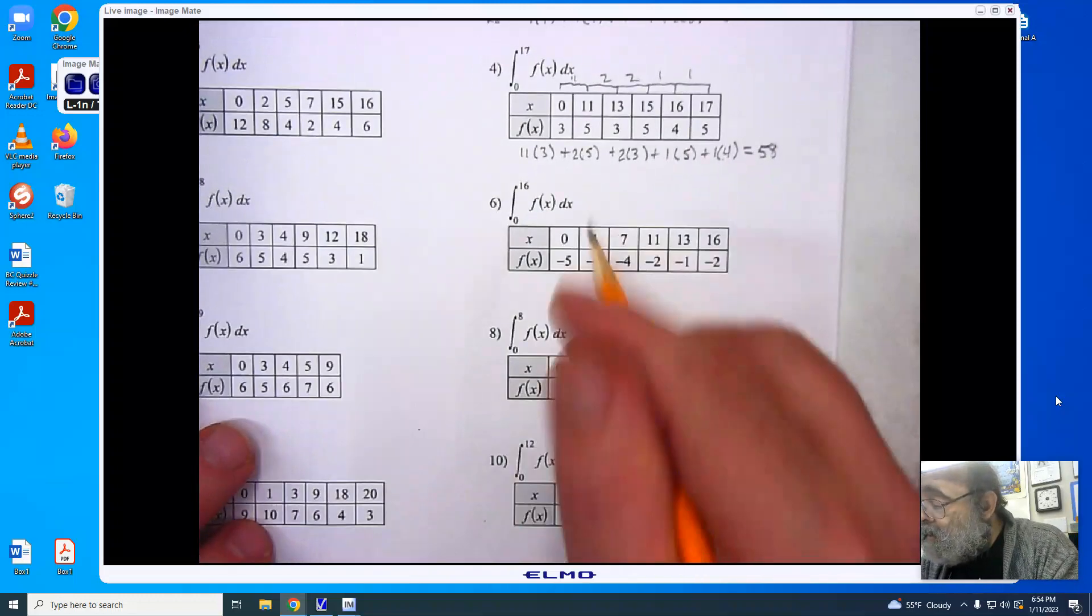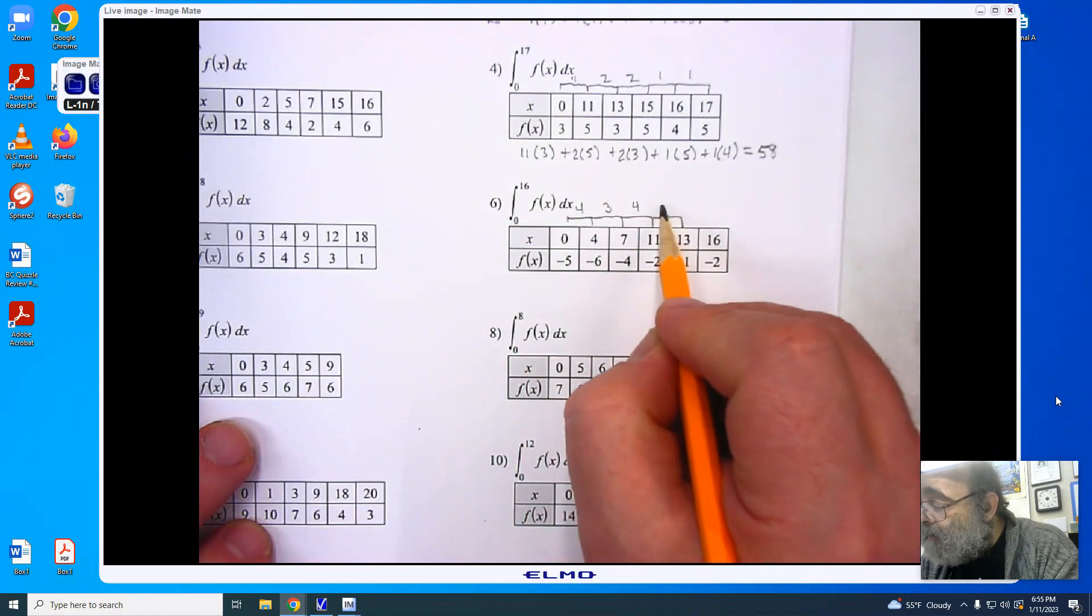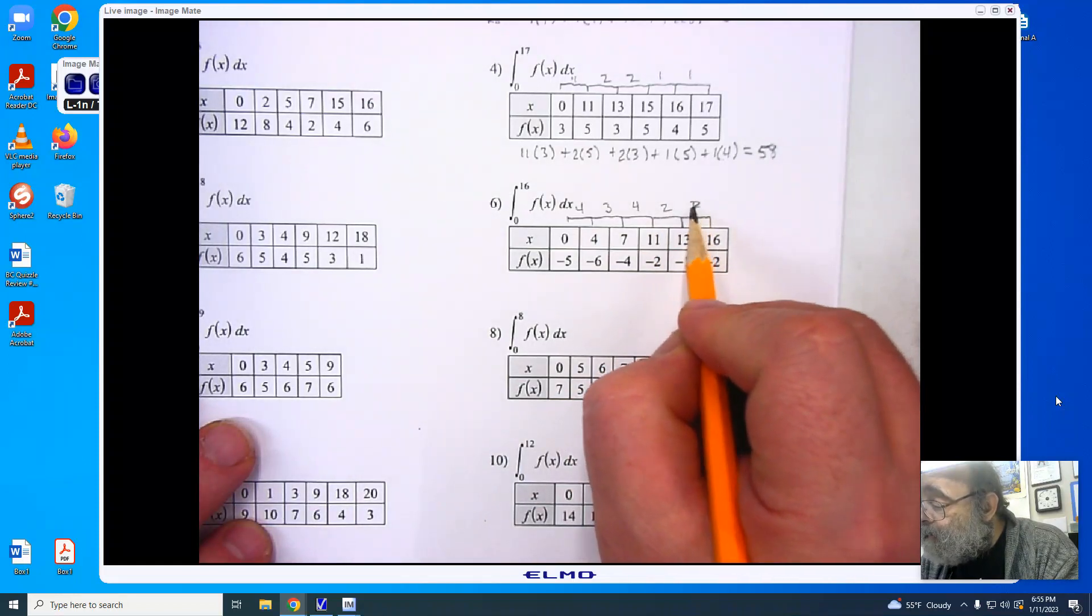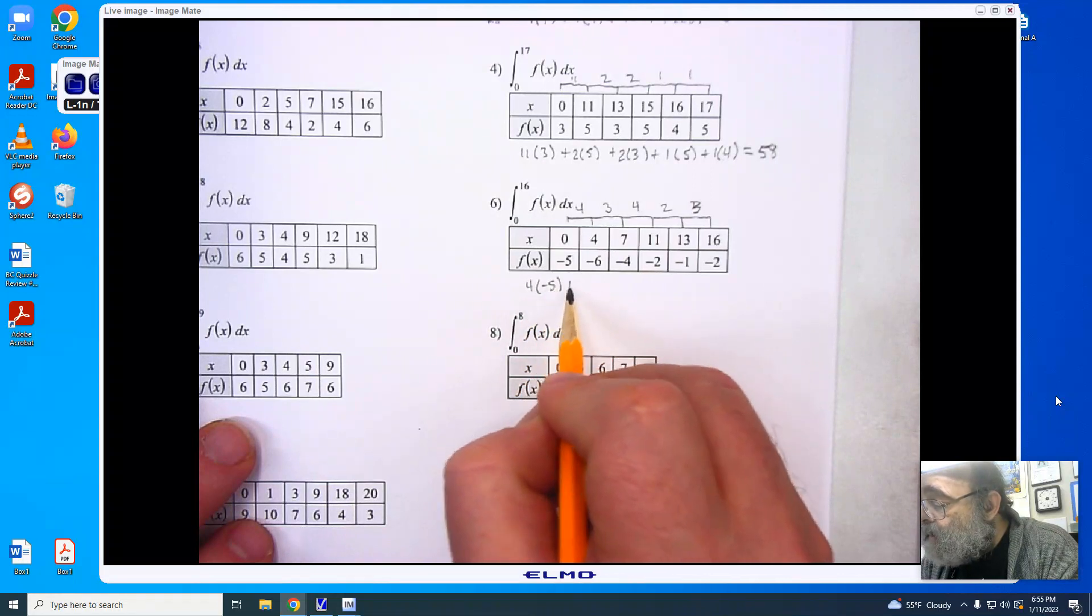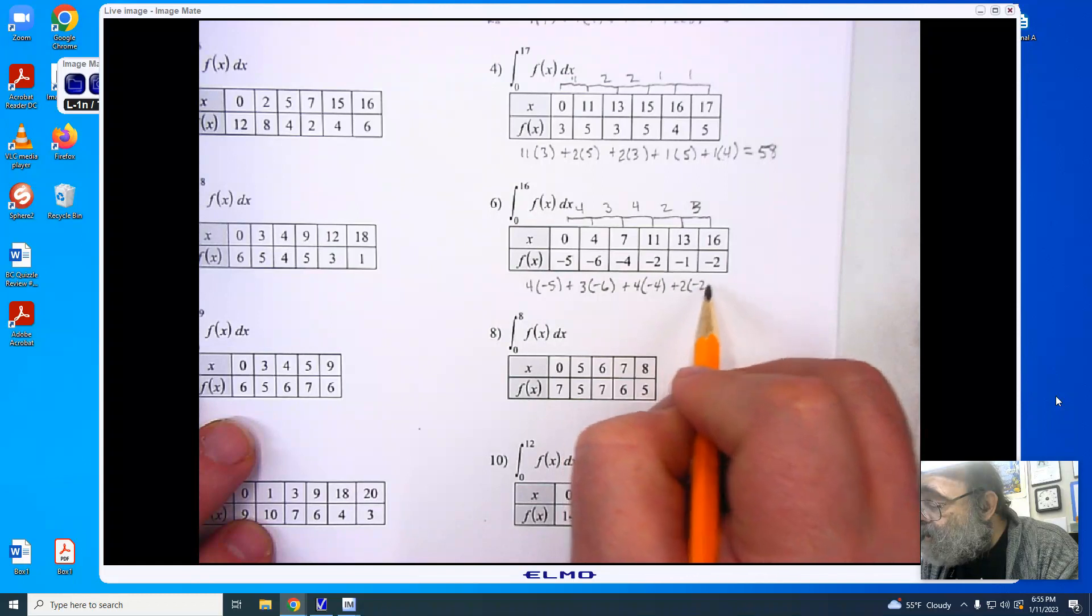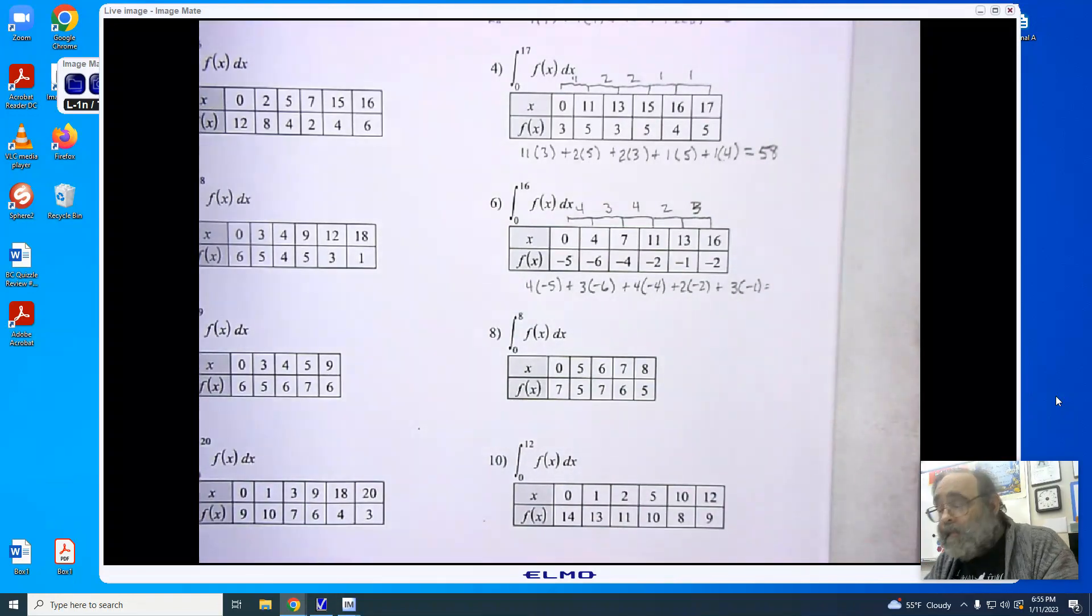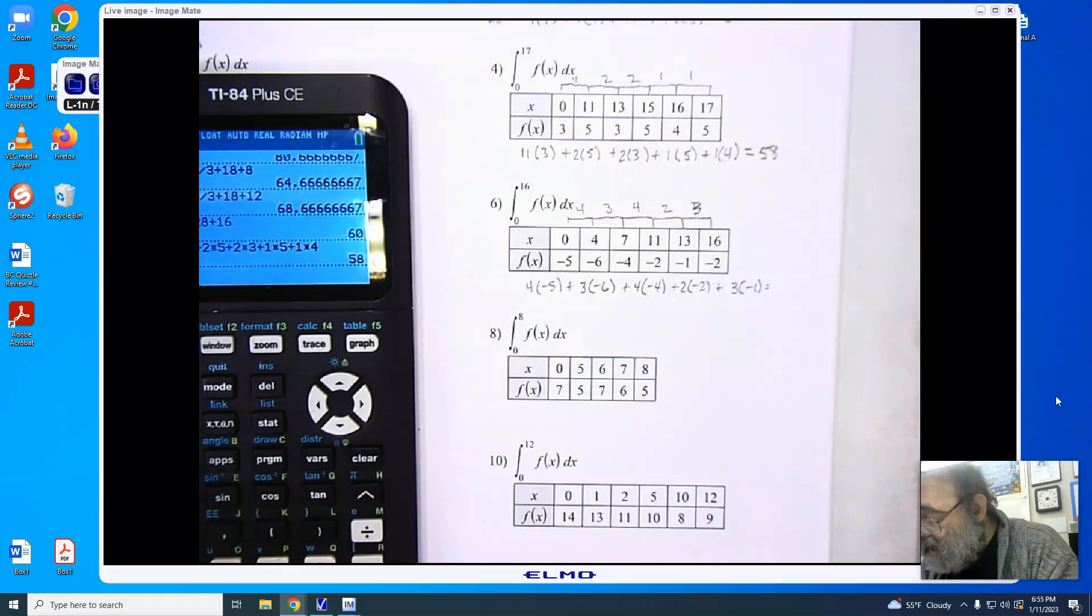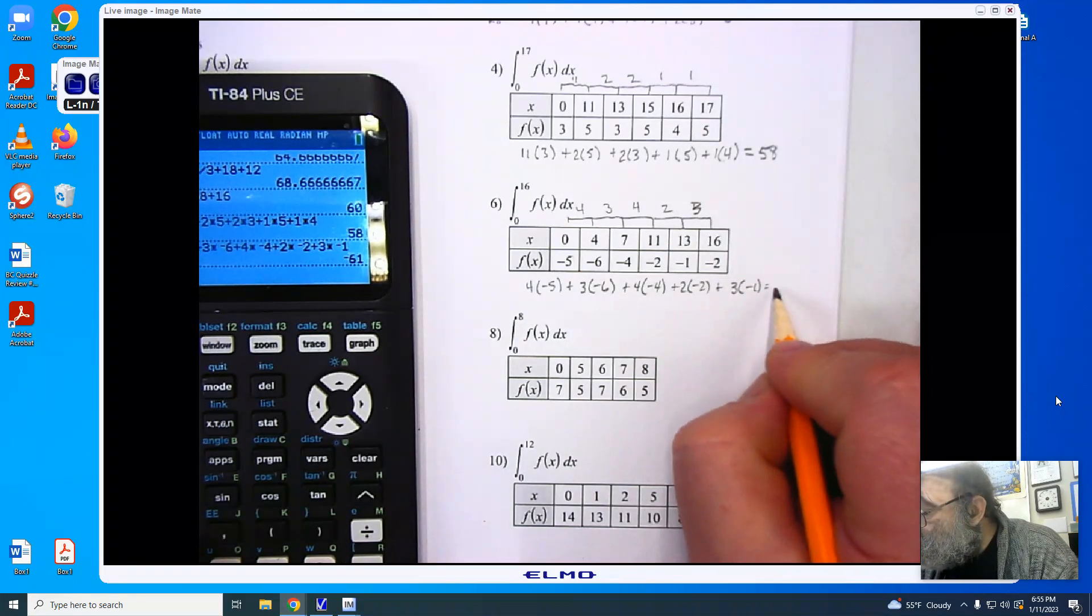Following in the same pattern, we have a gap of 4, gap of 3, gap of 4, gap of 2, and a gap of 3. There we go. So, we're using our left value. That's going to give me 4 times negative 5, plus 3 times negative 6, plus 4 times negative 4, plus 2 times negative 2, plus 3 times negative 1. We're now going to add them all up, and write our answer down. 4 times negative 5, plus 3 times negative 6, plus 4 times negative 4, plus 2 times negative 2, plus 3 times negative 1, enter. And we get negative 61.